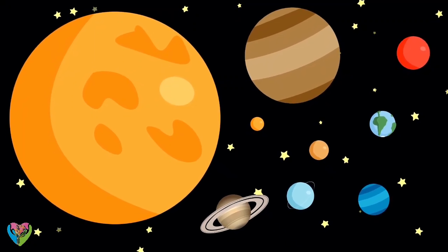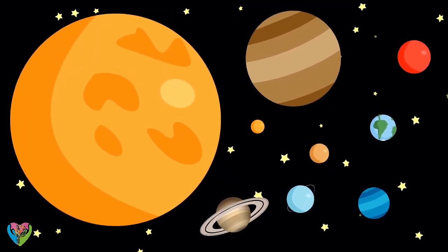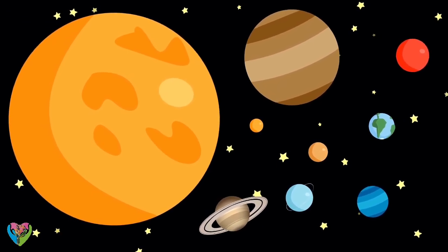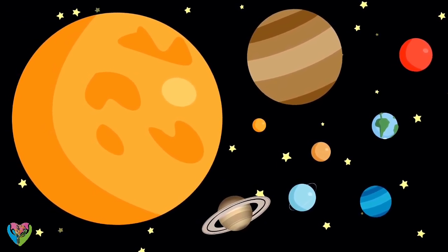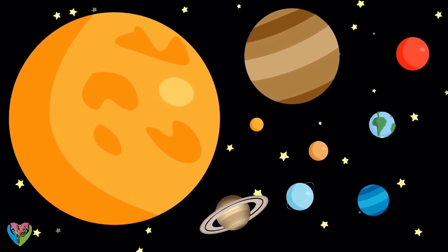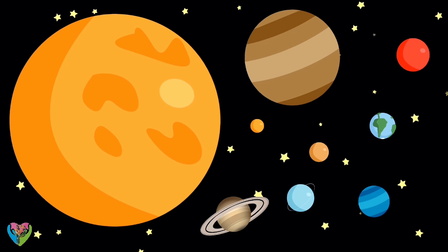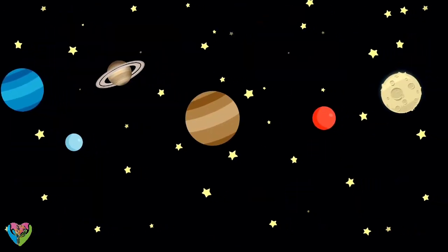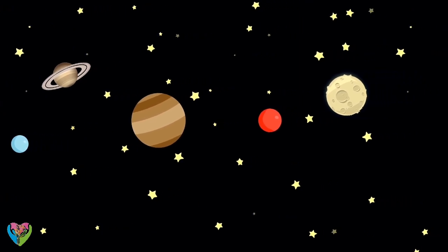The solar system is the gravitationally bound system of the Sun and the objects that orbit it. It formed 4.6 billion years ago from the gravitational collapse of a giant interstellar molecular cloud. The vast majority, 99.86 percent, of the system's mass is in the Sun, with most of the remaining mass contained in the planet Jupiter.